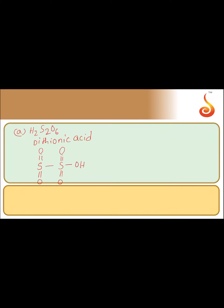The structure of dithionic acid contains OH and OH groups. It is a dibasic acid because it contains two acidic hydrogens.